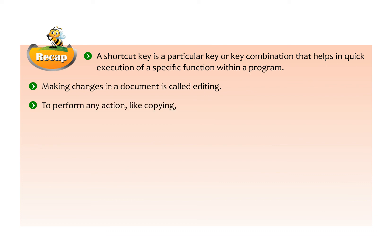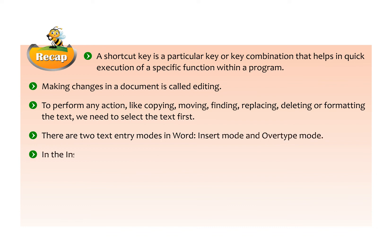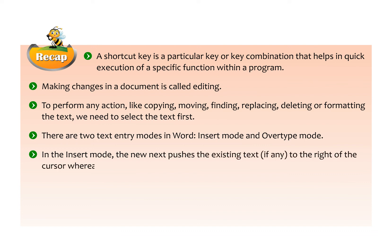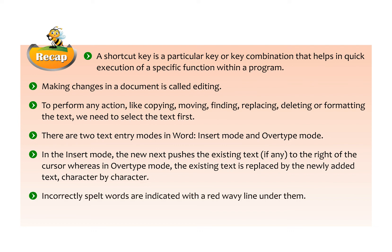To perform any action like copying, moving, finding, replacing, deleting, or formatting text, we need to select the text first. There are two text entry modes in Word: Insert mode and Overtype mode. In Insert mode, the new text pushes existing text to the right of the cursor. In Overtype mode, existing text is replaced by newly added text character by character. Incorrectly spelt words are indicated with a red wavy line, and grammatical errors with a green wavy line.